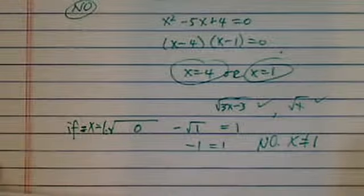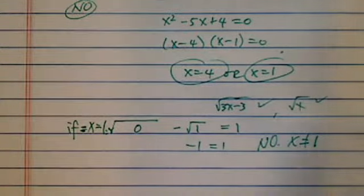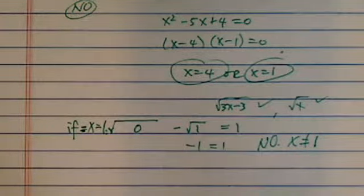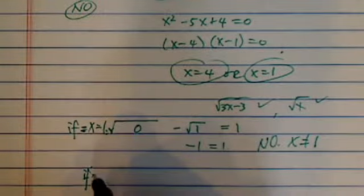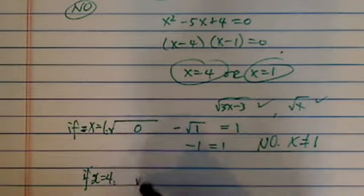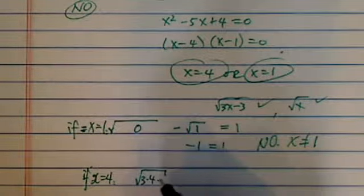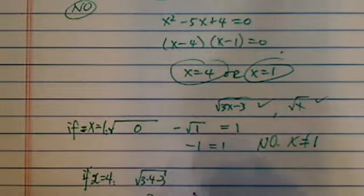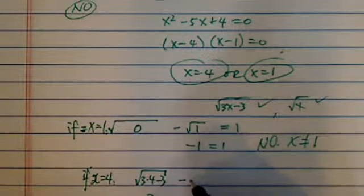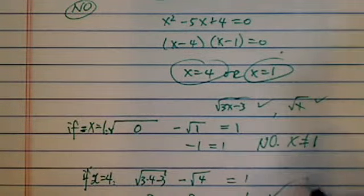The reason that we have two solutions and one of them doesn't work is when we square it, we sometimes create a shadow solution. Let's check if x equal to 4, then I have a radical of 3 times 4 minus 3. So it's 12 minus, that's 9, so this becomes 3. Minus radical 4, which is minus 2, equal to 1, equal to 1. Yes.